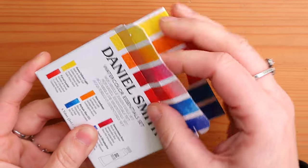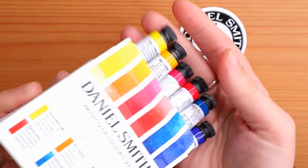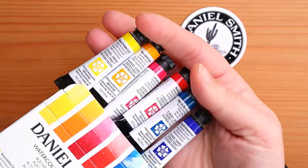Okay, so this is the set. Cute, teeny, tiny tubes of Daniel Smith watercolor paint. So tiny, my cats could swallow them whole. But this is actually quite clever because you have the three primary colors in their cool and in their warm version.